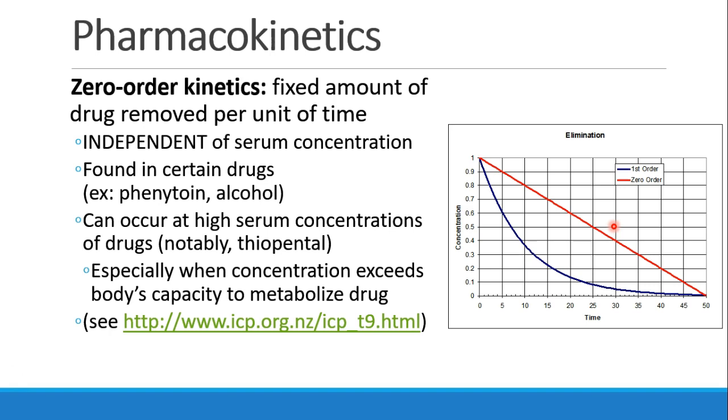Certain drugs usually undergo zero-order kinetics, like alcohol. You may hear people talk about being able to metabolize a drink an hour or something like that. That's an example of zero-order kinetics. But many drugs which undergo first-order kinetics will convert to zero-order kinetics at very high serum concentrations. And this happens, especially if the concentration is higher than your body's capacity to metabolize the drug.